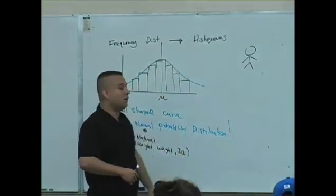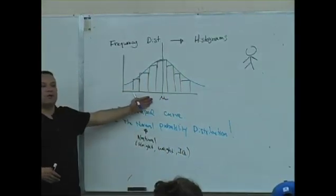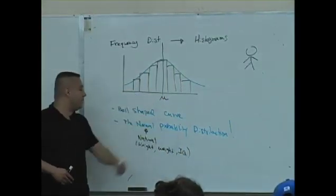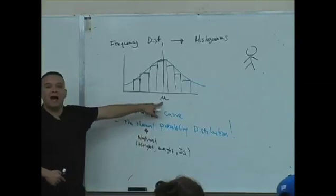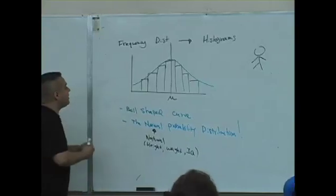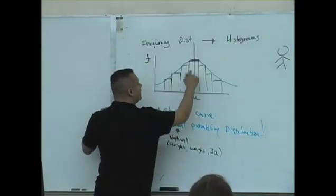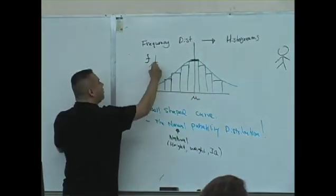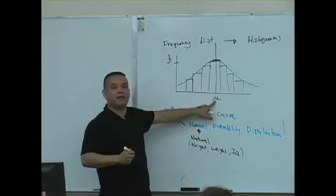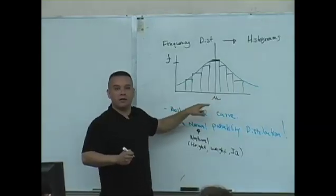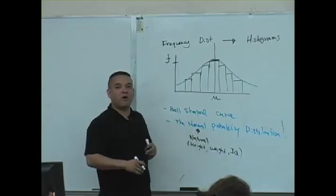Things that happen naturally usually have this type of distribution - it's called the normal probability distribution. The center is the average, the mean. By this histogram you notice most people have the highest frequency value - most people are around the center, around the mean.